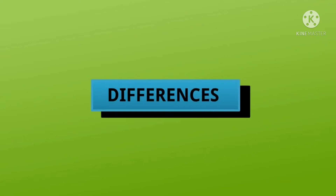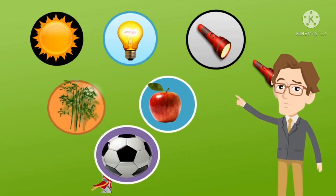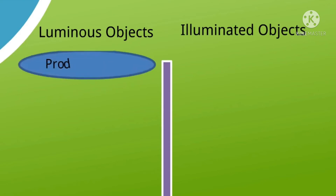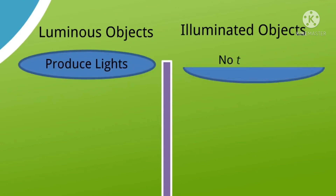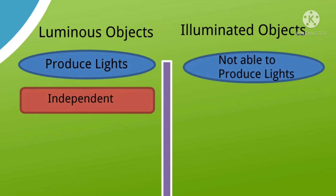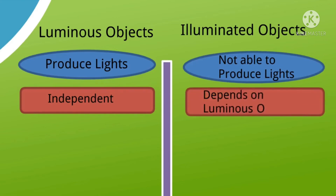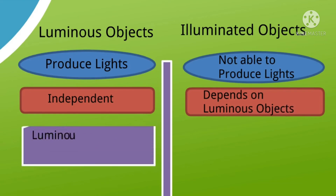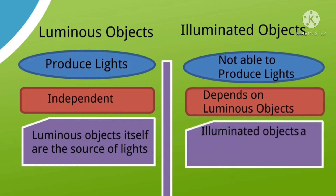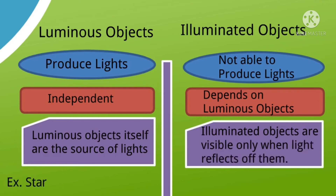Now let's look at the differences. Sometimes we may confuse sun and bulb with apple and football — don't be confused. We can easily categorize luminous objects and illuminated objects. Luminous objects produce light; illuminated objects are not able to produce light. Luminous objects are independent; illuminated objects depend on luminous objects. Luminous objects are themselves the source of light; illuminated objects are visible only when light falls on them.